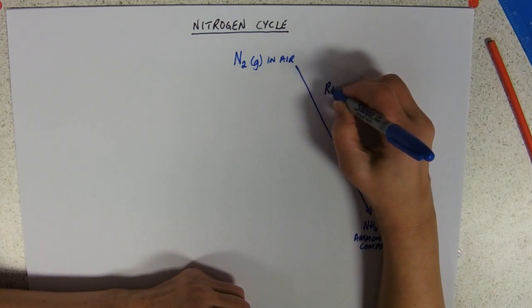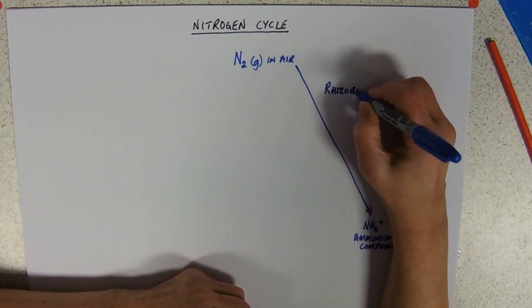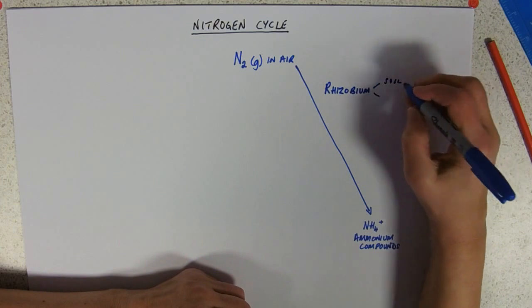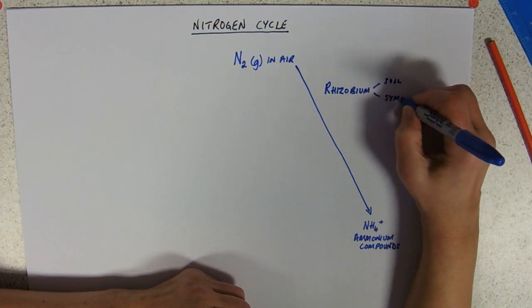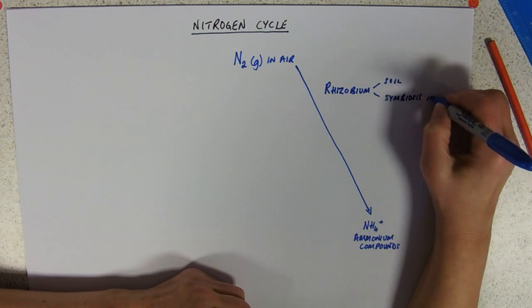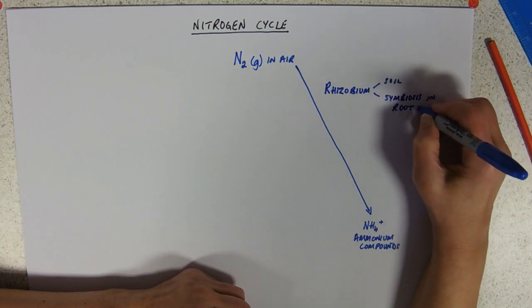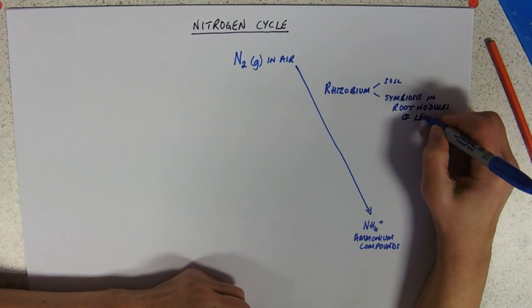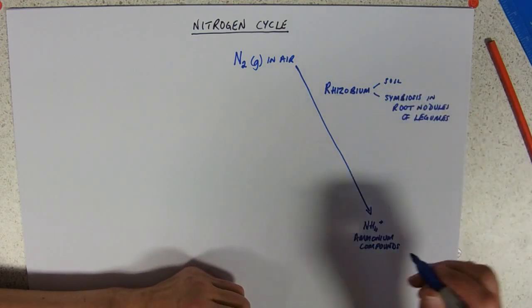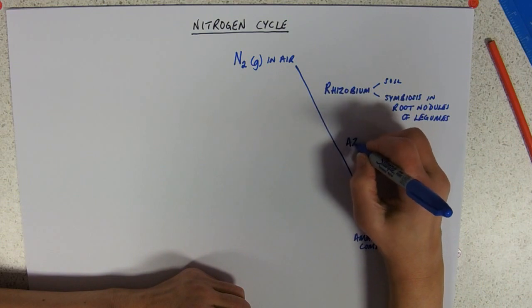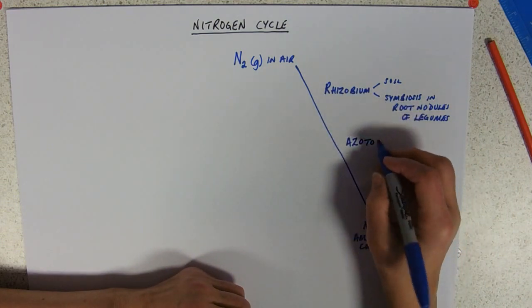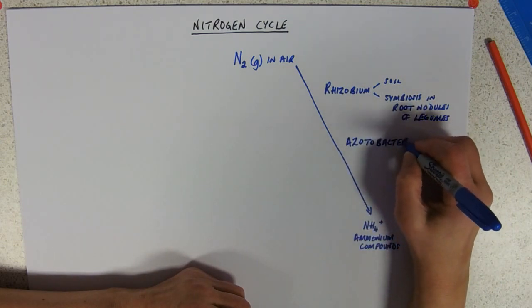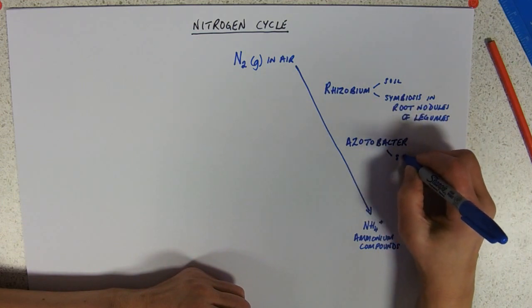They are called Rhizobium and you need to be able to spell this. That's found in soil and particularly in symbiosis in root nodules of legumes. And the other one is Azotobacter and you need to remember to put the oto in the middle. Azotobacter and they're found in soil.